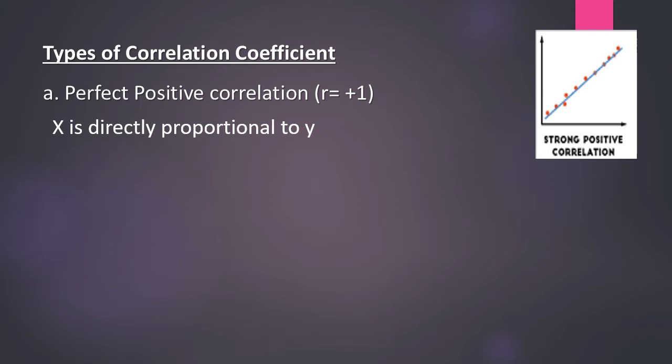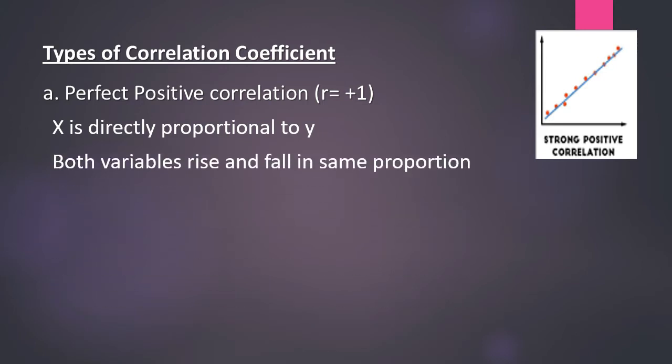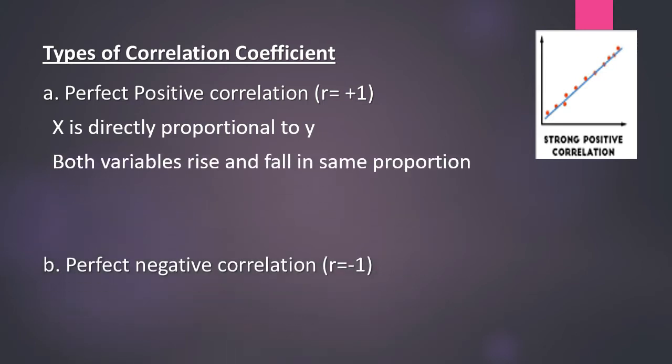Examples of perfect positive correlation include height and weight — as height increases, weight increases — and salary and experience — as experience increases, salary increases. The second category is perfect negative correlation, where r equals minus one, and x and y are inversely proportional to each other.